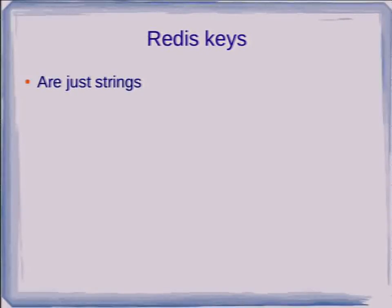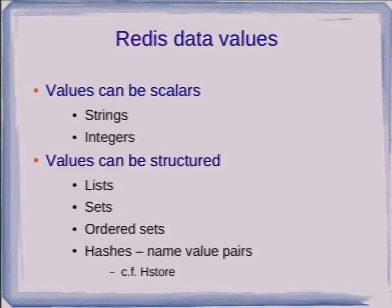Redis, as I said, is a key-value data store and the keys are just strings — that's all they are. But the values are rather different. They can be scalar values — they can be strings, or they can be integers. So you have increment operations, which are useful for doing things like web counters and so on.